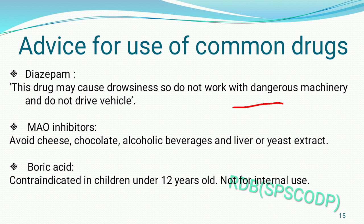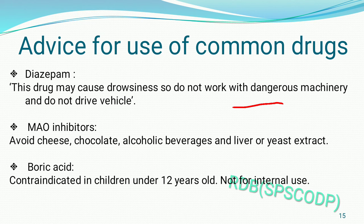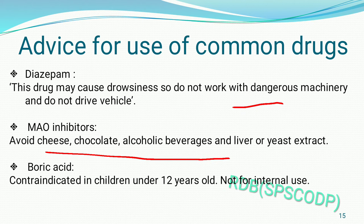The advice for MAO inhibitors (monoamine oxidase inhibitors) — this enzyme inhibits the breakdown of adrenaline and noradrenaline. When taking MAO inhibitors, patients should avoid tyramine-containing foods such as cheese, chocolate, and alcoholic beverages, because these foods increase adrenaline levels in the body, which can cause serious effects.